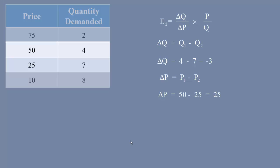You know in the formula P stands for initial price rupees 50 and Q stands for initial quantity 4 units. Substitute these values in the formula. Upon simplifying, we get the elasticity value minus 1.5.